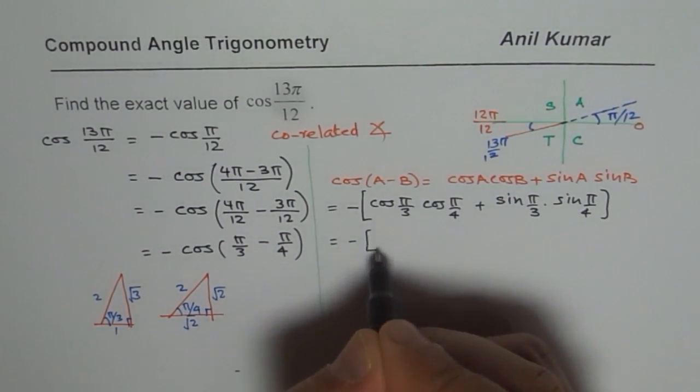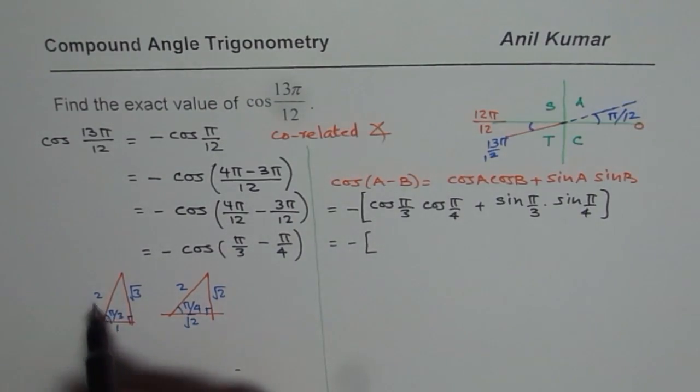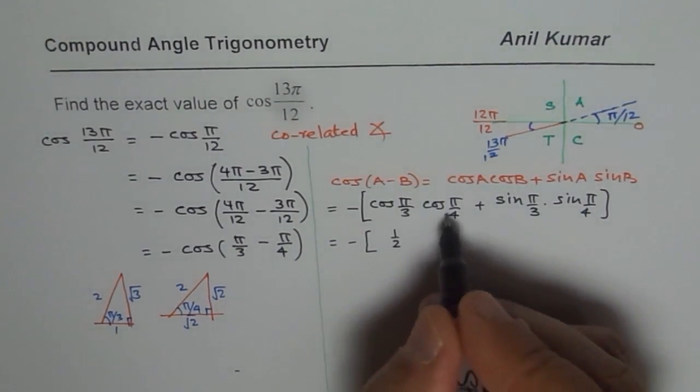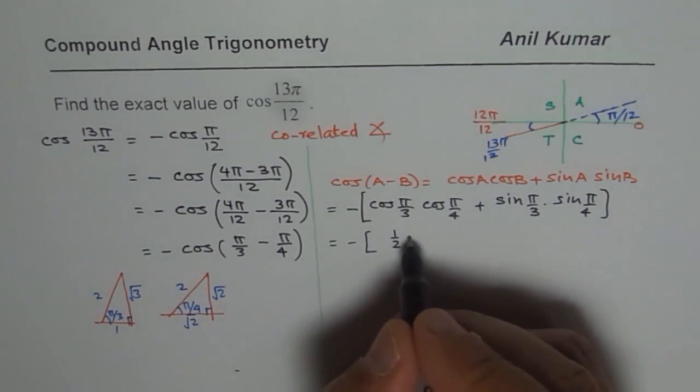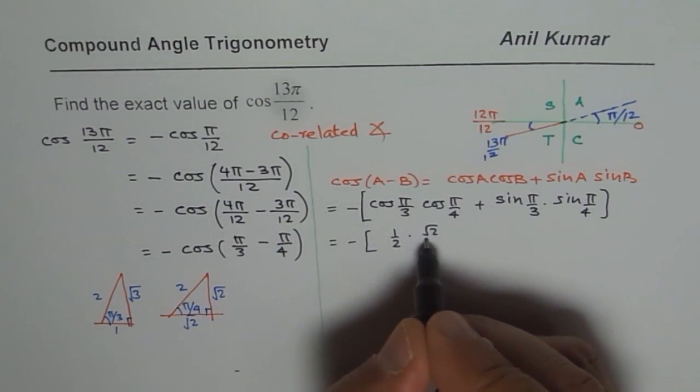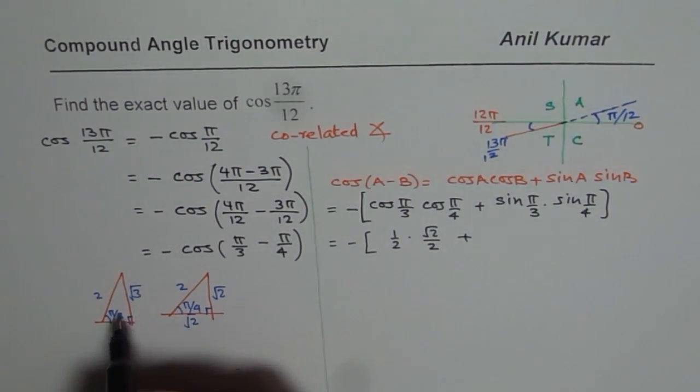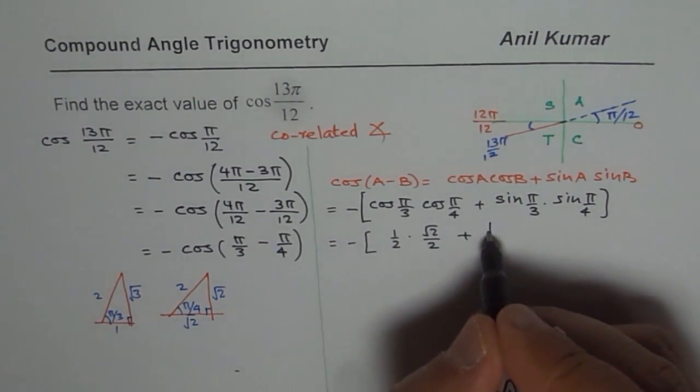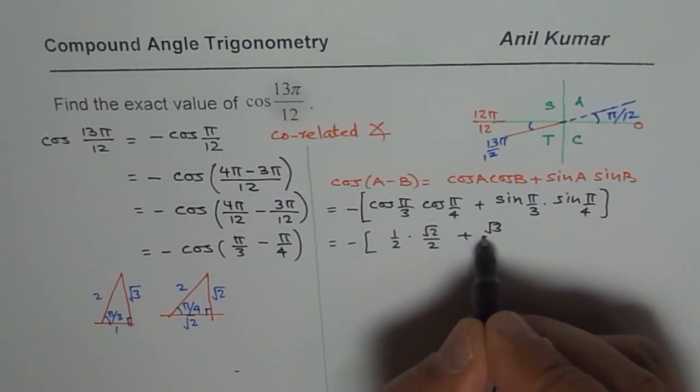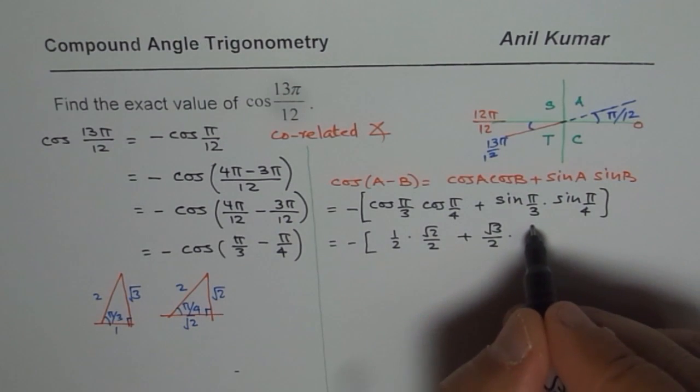So, now we have cos of π/3 is half, so we will write this as half. π/4 is √2 over 2 times √2 over 2 and sin π/3 is opposite over hypotenuse, √3 over 2 and sin π/4 is √2 over 2.